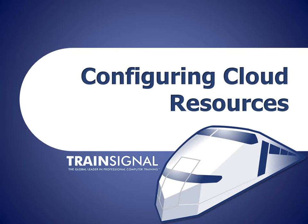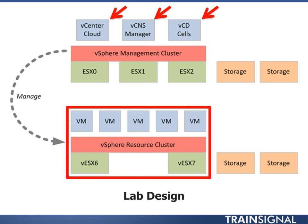Hello, you're watching a lesson on configuring cloud resources. I'm going to pull up the lab design so you get the layout of where we are. We'll be targeting four areas: the vCloud Director cell, deploying the vCNS manager, connecting vCNS and configuring vCloud to our vCenter cloud, and building provider data center information in the vSphere resource cluster.